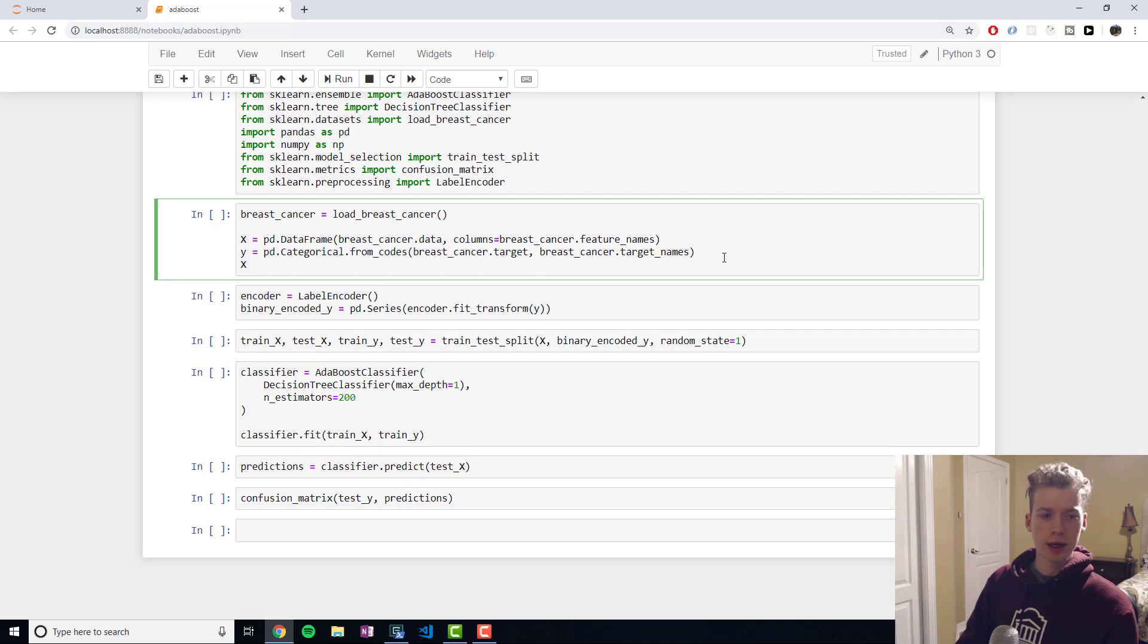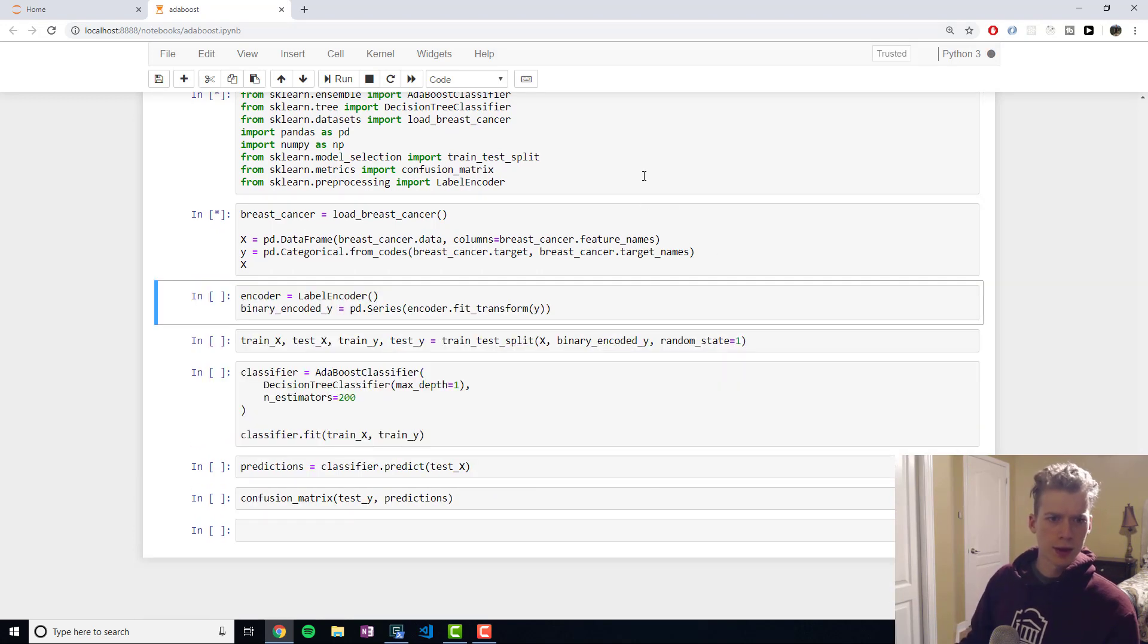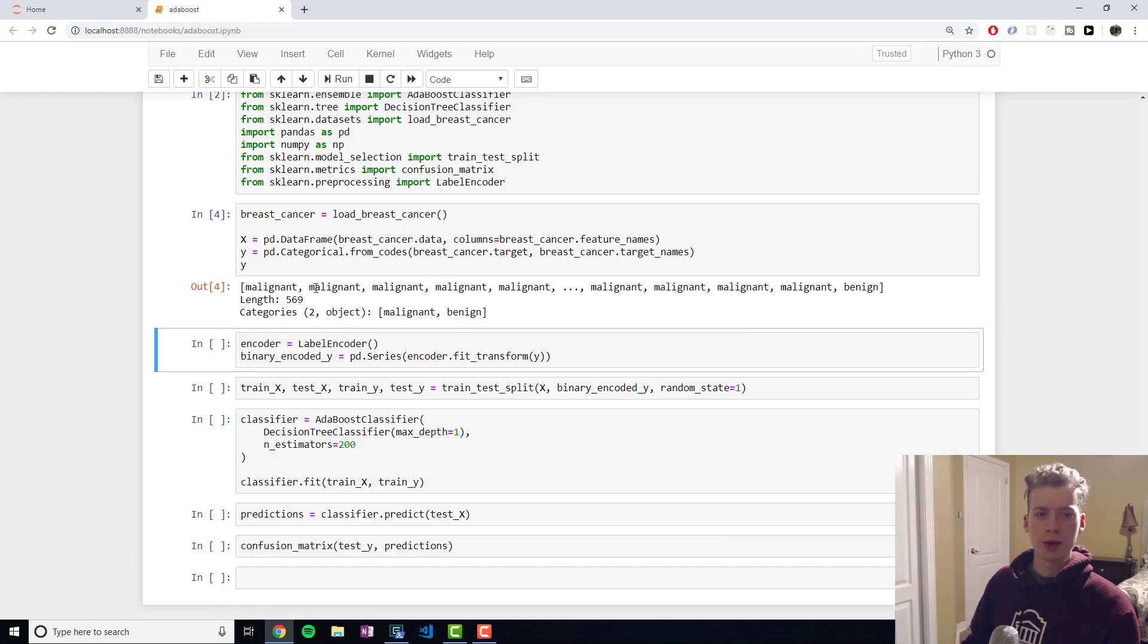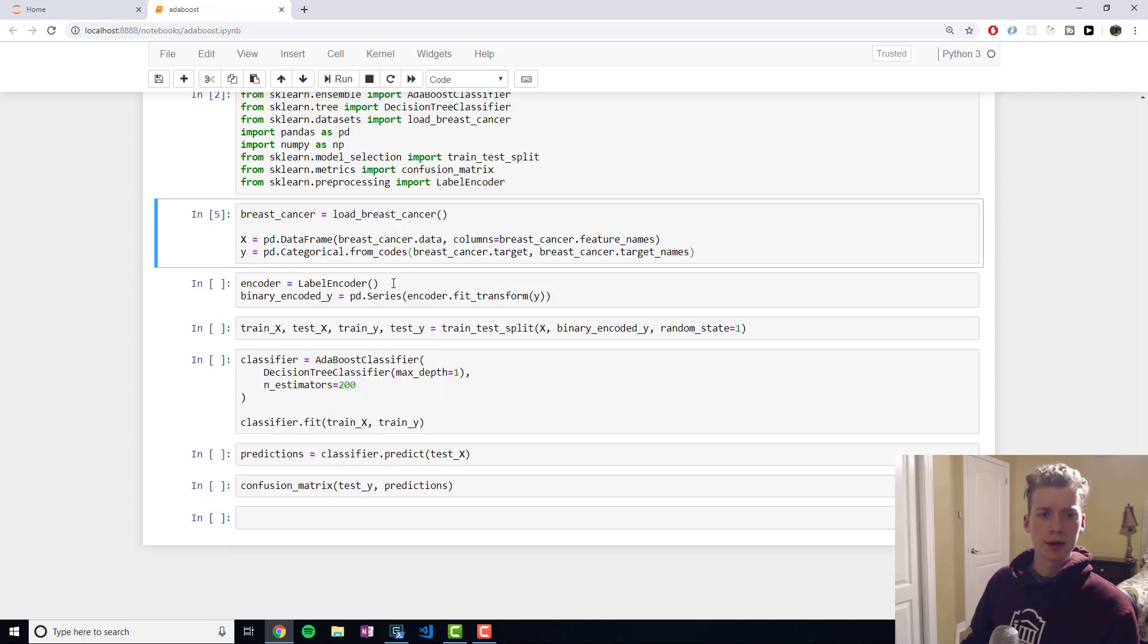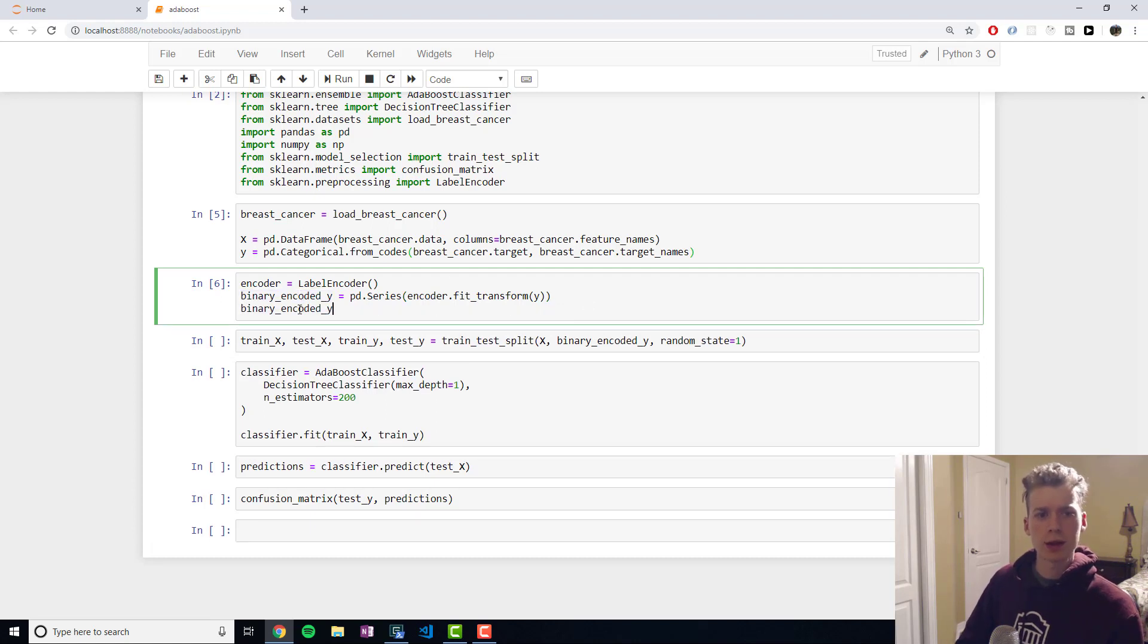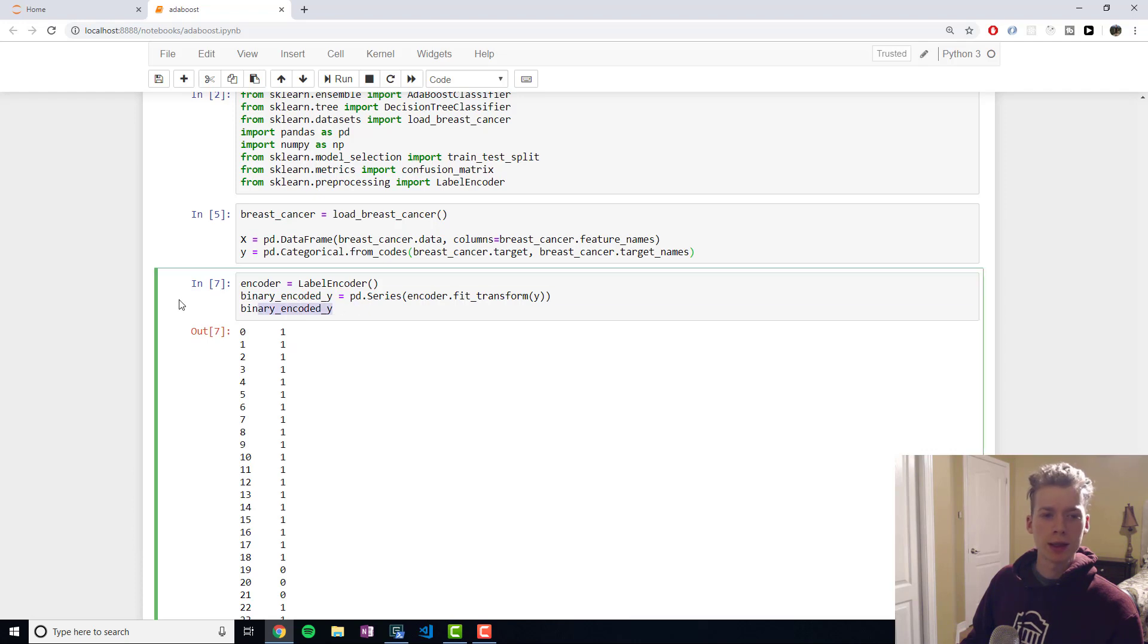If we just want to take a look at our data right here—oops, I forgot to run this—you can see that there's numerous features here, like the mean radius of the tumor, the mean perimeter, the mean area, things like that. We are attempting to classify a tumor as being malignant or benign. Because this is a categorical label, we're going to use the label encoder to encode it as ones and zeros. One is malignant and then zero is benign.